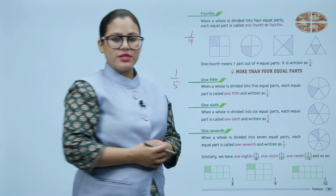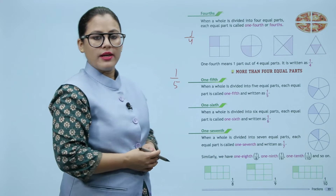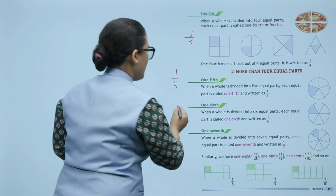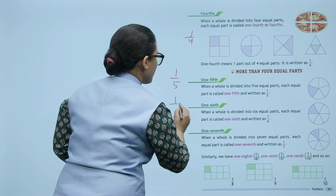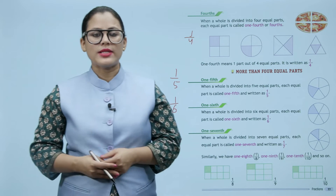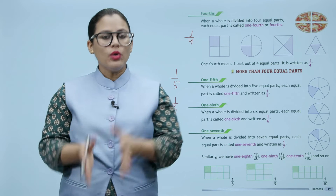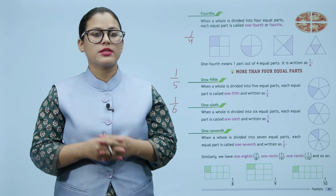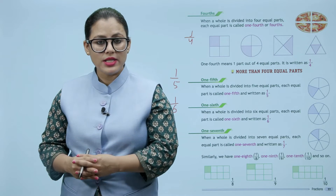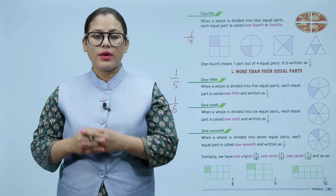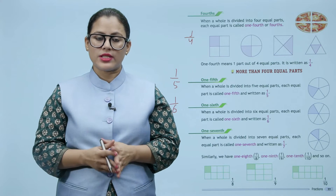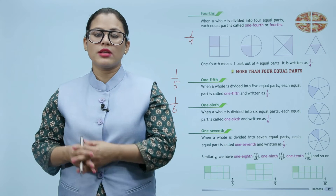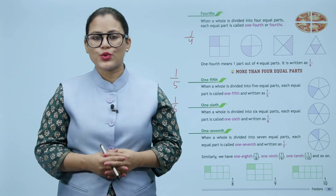If a whole is divided into seven equal parts, each equal part is called one-seventh, written as one by seven. Similarly, we have one-eighth, one-ninth, and one-tenth, and so on.